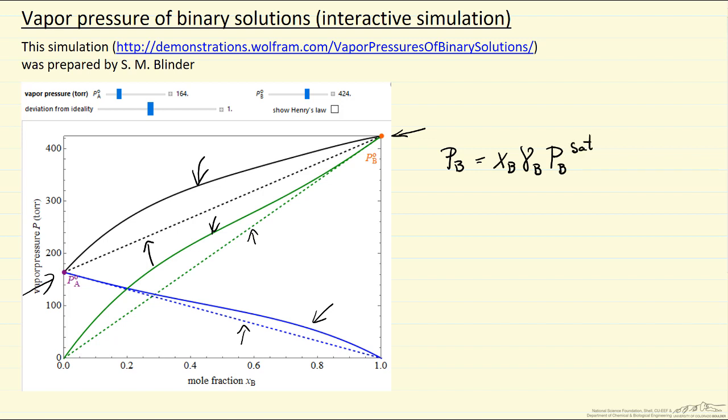There's an equivalent for A, and then the total pressure is the mole fraction, activity coefficient, and pressure for A, and then the mole fractions, activity coefficient, and saturation pressures for B.